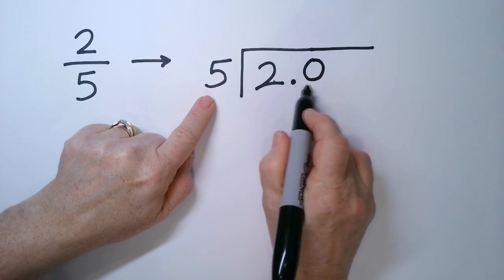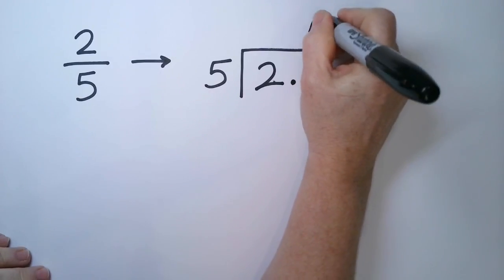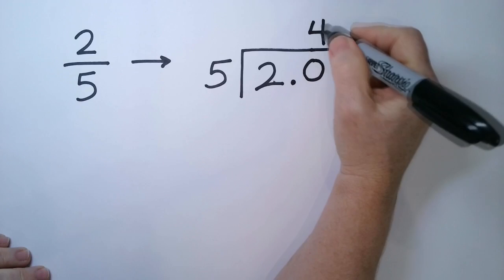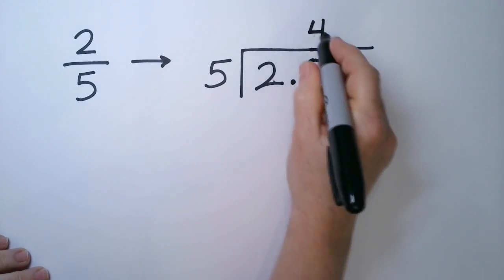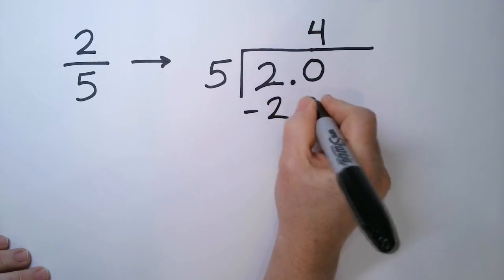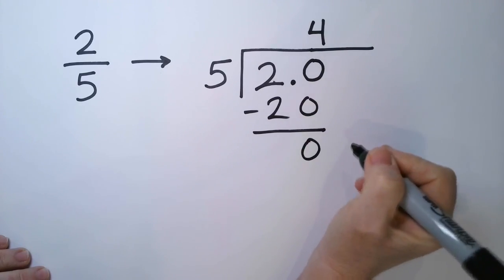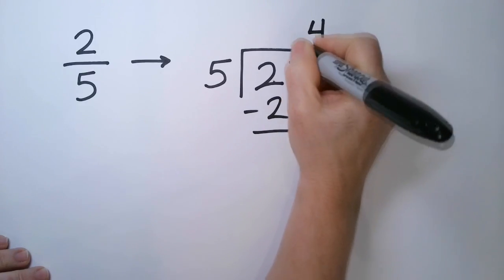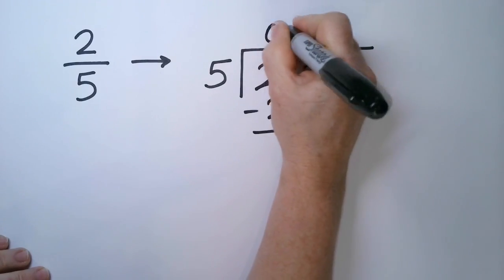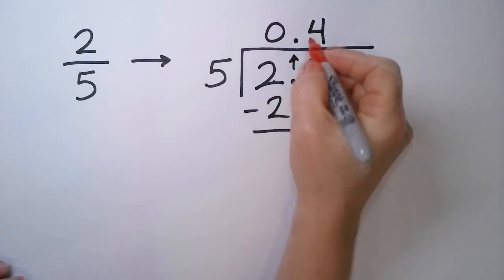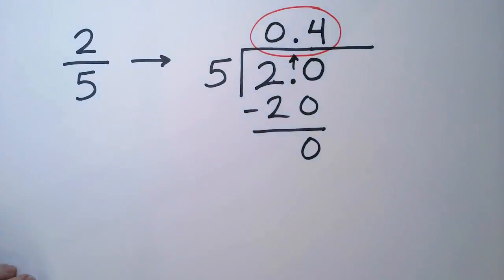Just ignore the decimal point there. So 5 goes into 20, 4 times. You put the 4 on the rightmost digit. 5 times 4 is 20 and we have no remainder. So we're actually done with the problem. We're going to push up the decimal point here and our final answer is 0.4.